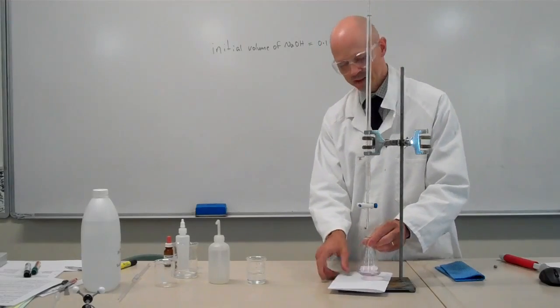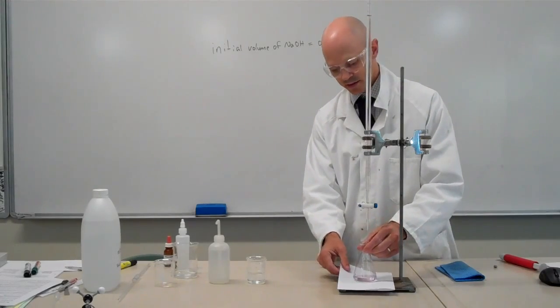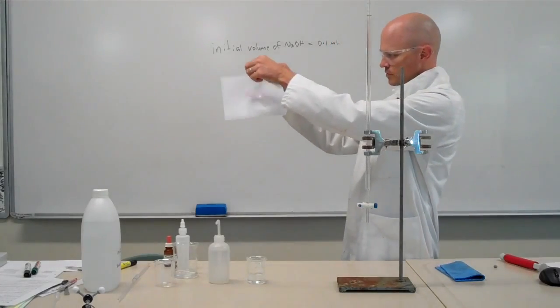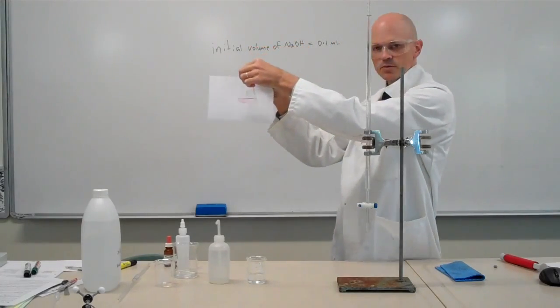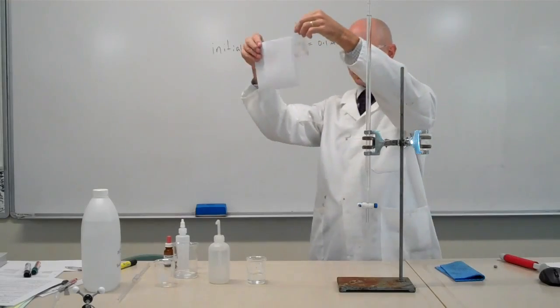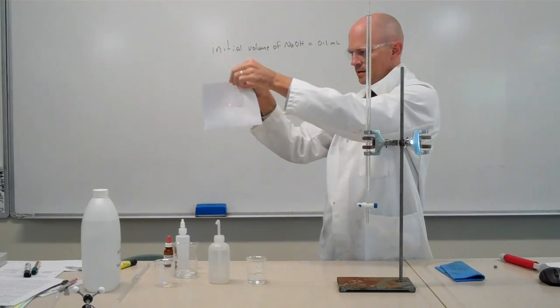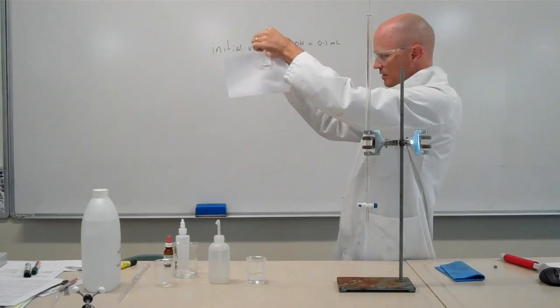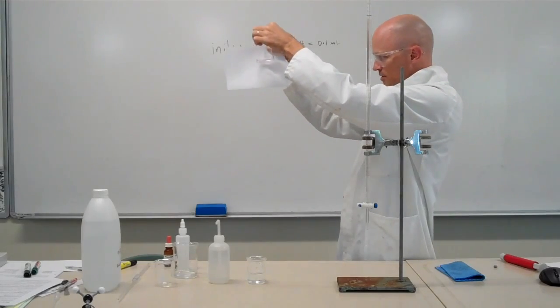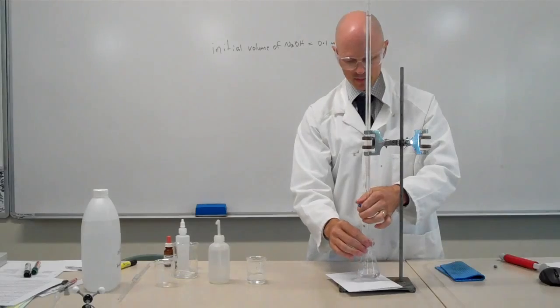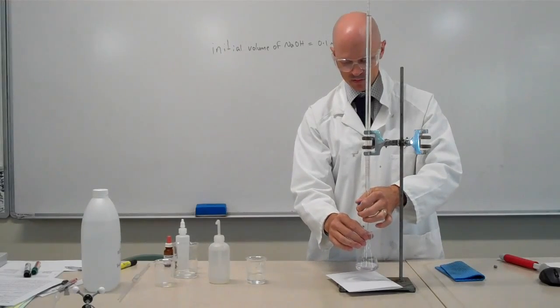Now I have a piece of white paper underneath the burette, which actually helps me see the colour change. Sometimes it can be useful to look through the actual liquid directly through. You can see the colour change a little bit better. I'm not sure if you can see on the video, I do have a permanent colour change there, very slight one. I'm going to add just a little bit more colour just so that it is a bit more visible.